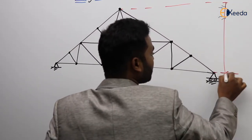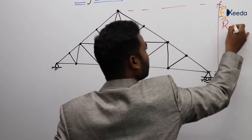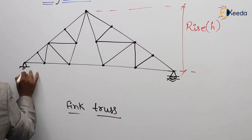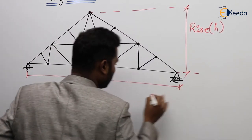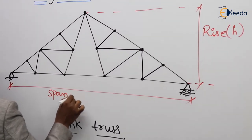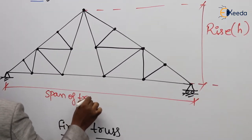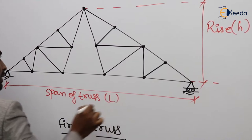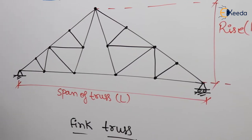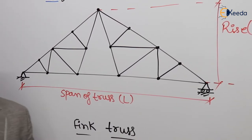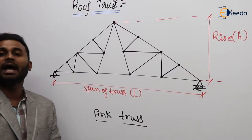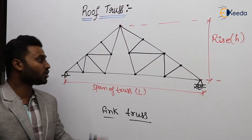This is known as the rise of the truss, H, and this is known as the span of the truss, N. These are known as joints. Of course we know the property of truss — a truss is a member which is subjected to axial forces only, and the load will act at the joints or nodes.